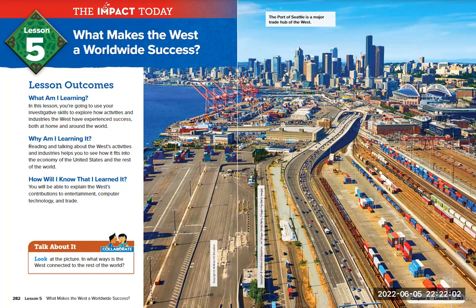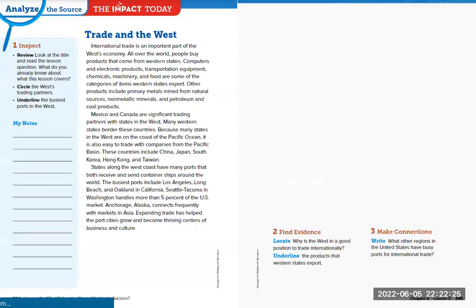Here we have a photo of the Port of Seattle, which is a major trade hub in the west. A port is a place that allows ships to dock — it's usually along the water and it allows shipping containers to access boats easily from one side to the other. We're on page 282 right now; we're going to go to pages 283 and 284.